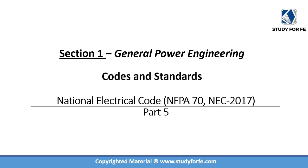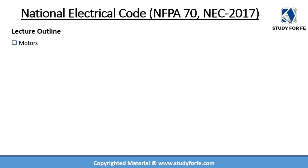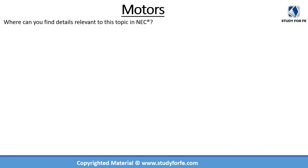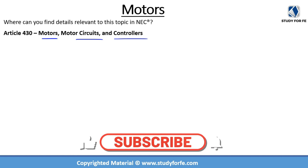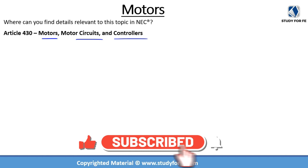Hello and welcome to part 5 of our multi-part lecture series on the topic of National Electrical Code, which is a subsection of Codes and Standards. This lecture is dedicated to motors, and we are going to learn about code requirements for motors. Article 430 is dedicated to motors, motor circuits, and controllers. It is one of the biggest articles in the code with 14 parts, because motors are the workhorses of industry, especially induction motors, and there are so many requirements in the code that we need to comply with.